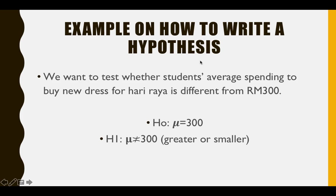Next example: Let's say we want to test whether students' average spending to buy a new dress for Hari Raya is different from 300 ringgit. We are saying that students will spend not exactly 300 ringgit — they could spend less or more than 300 ringgit. So our research hypothesis H1 is: mu (the sample mean) is not equal to 300. Whereas H0 states that mu is equal to 300 ringgit. The phrase 'we want to test' signals that this is the H1, or alternate/research hypothesis.